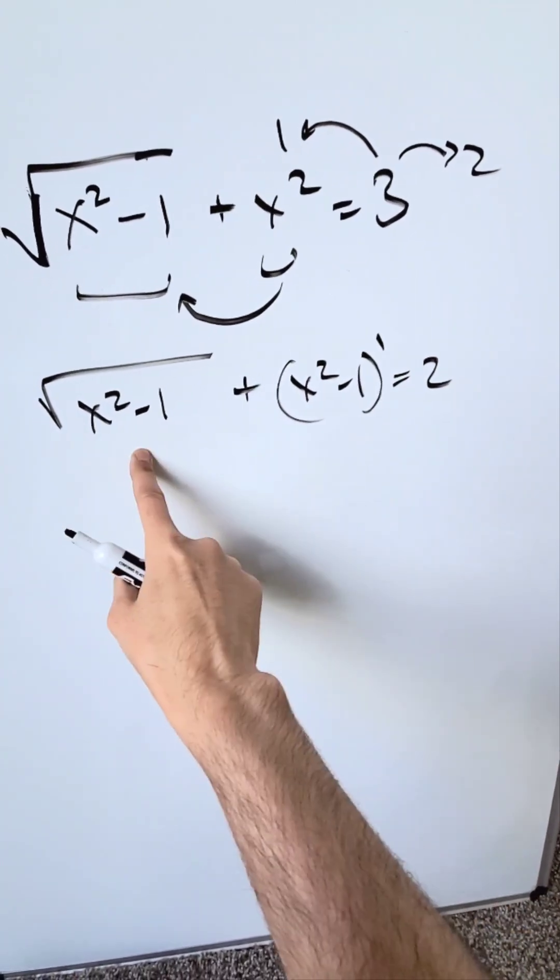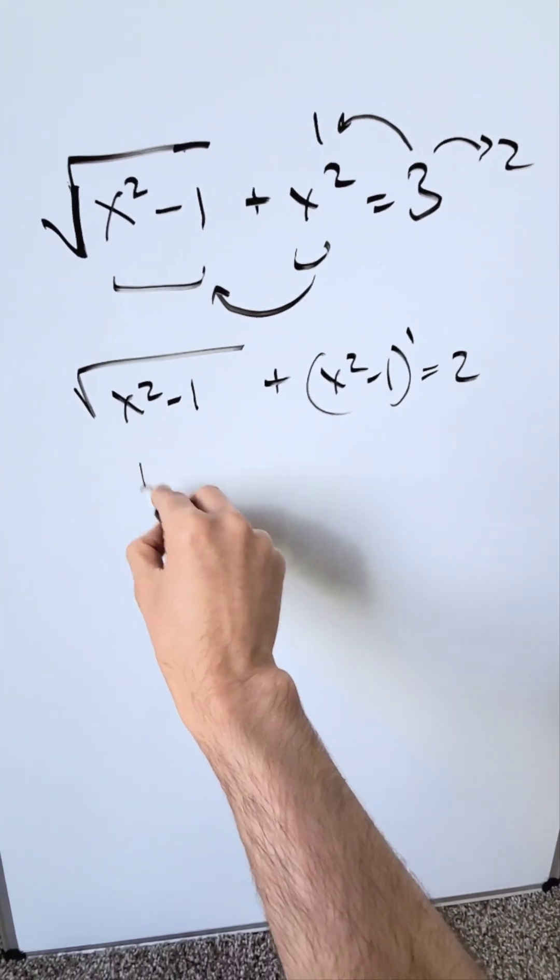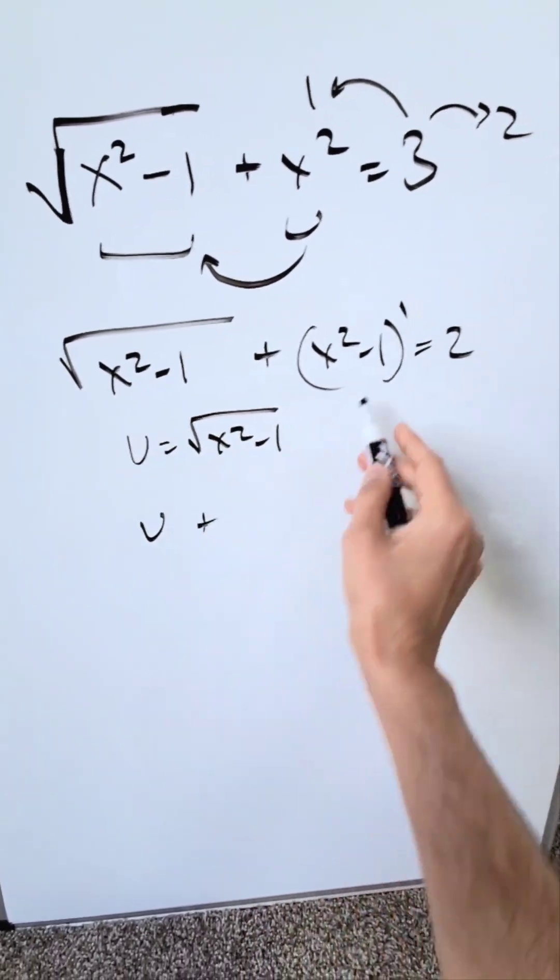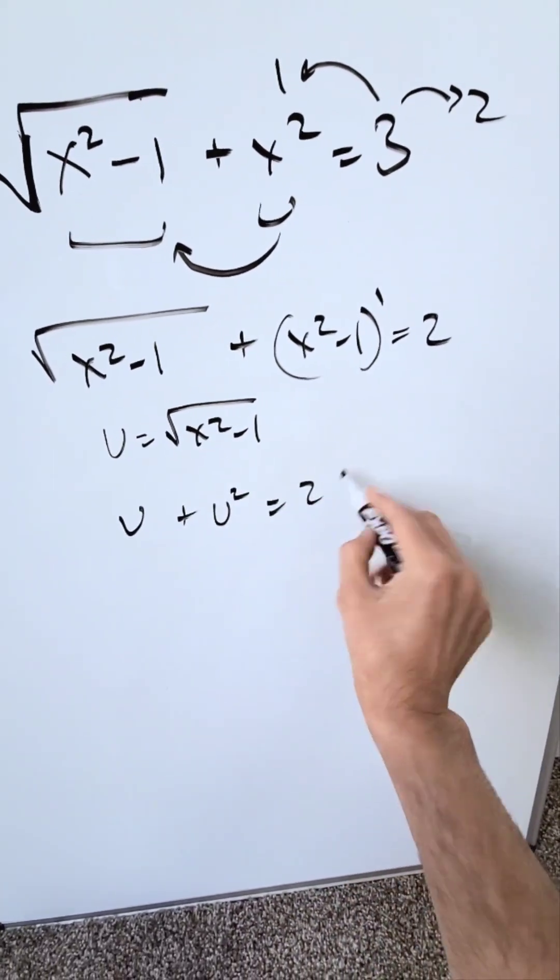Now I can do a substitution. Let u = √(x²-1). Then this becomes u, and the x²-1 term becomes u². So we have u + u² = 2.